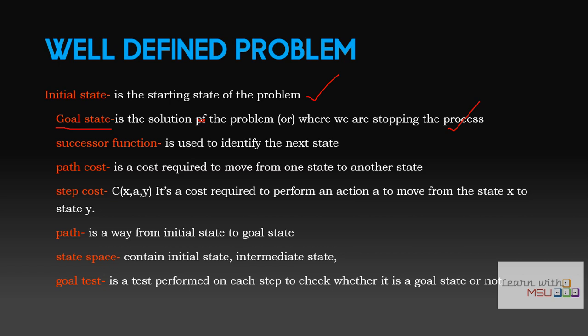The successor function is used to identify the next state. We start from an initial state and reach a goal state by processing through a number of intermediate states. Using the successor function, we move from the initial state towards the goal state one step at a time — that is what we call the successor function.